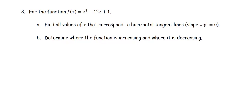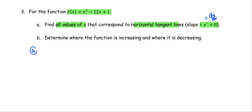For this example, given f(x) = x³ − 12x + 1, Part A: find all values of x that correspond to a horizontal tangent line. A horizontal tangent line has slope 0, and the slope is the derivative. So we need to find x such that f′(x) = 0, where f′(x) = dy/dx.